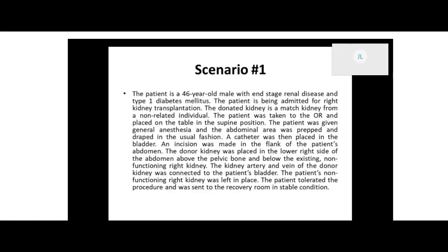So we go to Transplantation in our index — go to the front of our PCS codebook to T, look up Transplantation. Remember, you go to what they did, the root operation, and then where they did it is the body part. So we look up Transplantation and then Kidney, right? The patient was admitted for right kidney transplantation. So we go to Kidney, which is on page 120, and under Kidney we see Left or Right. Ours was the right kidney.